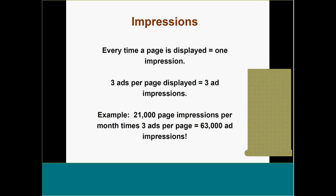Now, if we know the number of page views and we know there are three banner ads on every single page, we can calculate total ad impressions. If we served 21,000 pages to the general public in a given 30-day period, and there were three ads on every page, we take 21,000 times three — that gives us 63,000 ads a month. You simply take the number of page views times the number of ad spots available for advertisers, and that tells you how many ad impressions you have available each month.